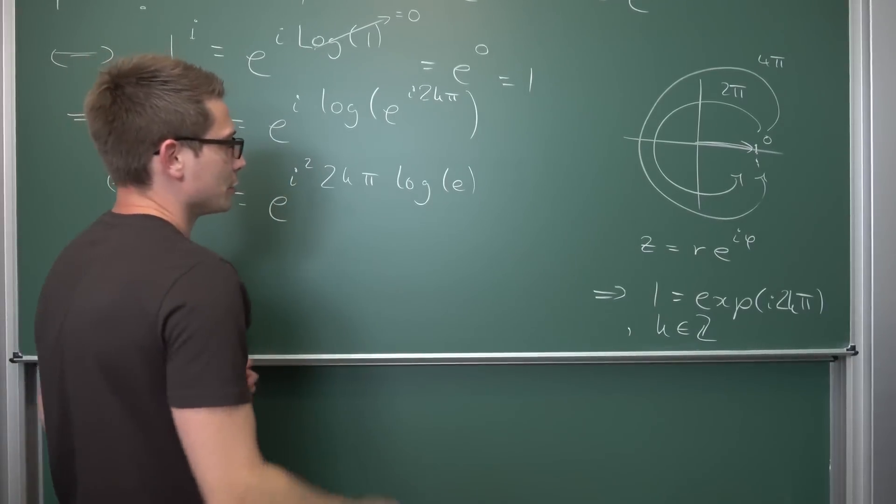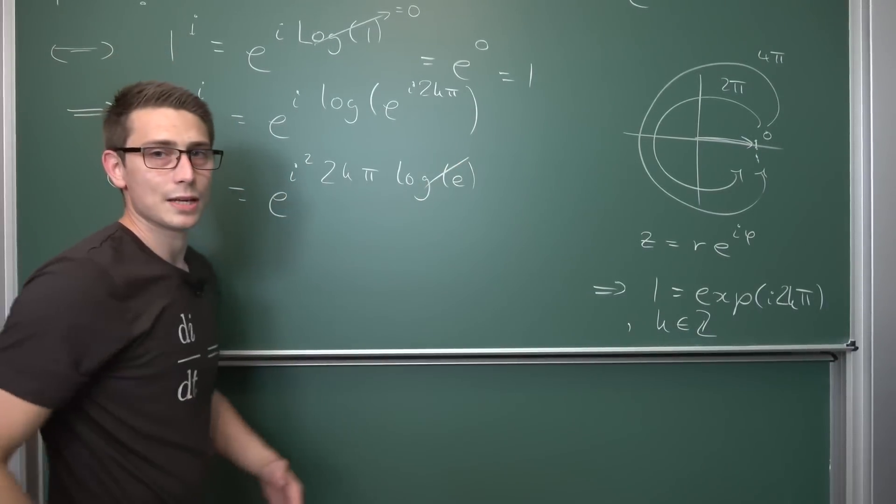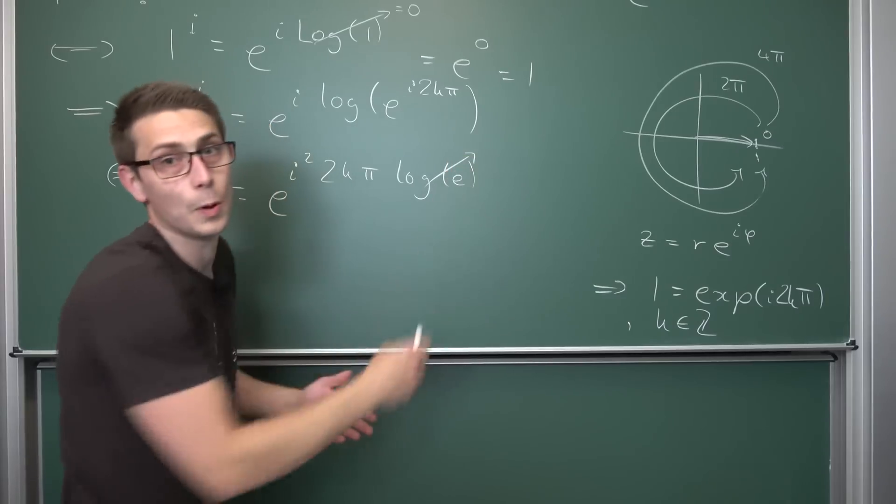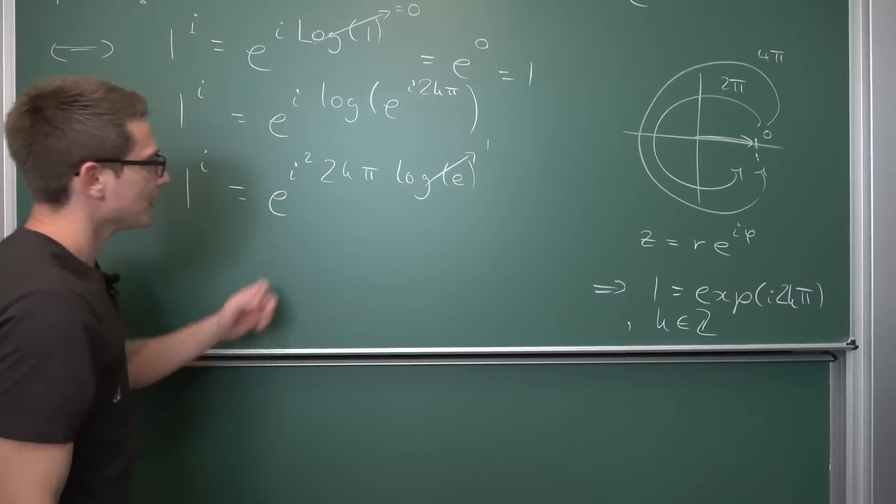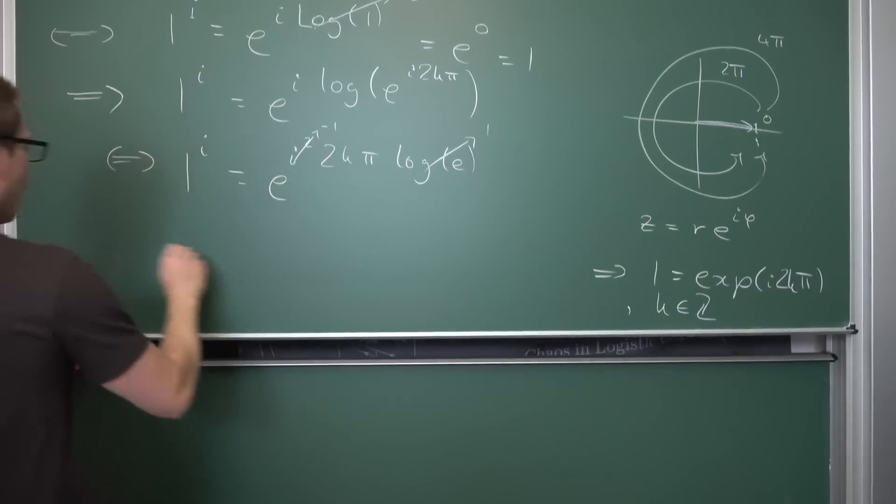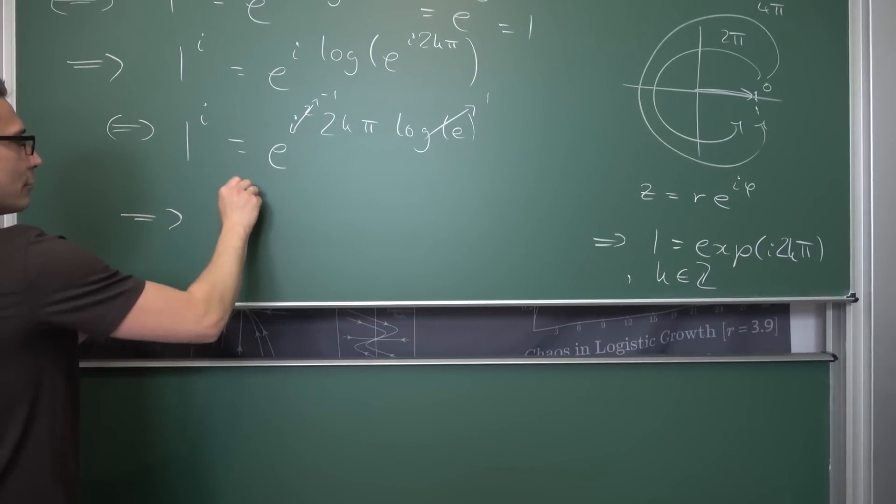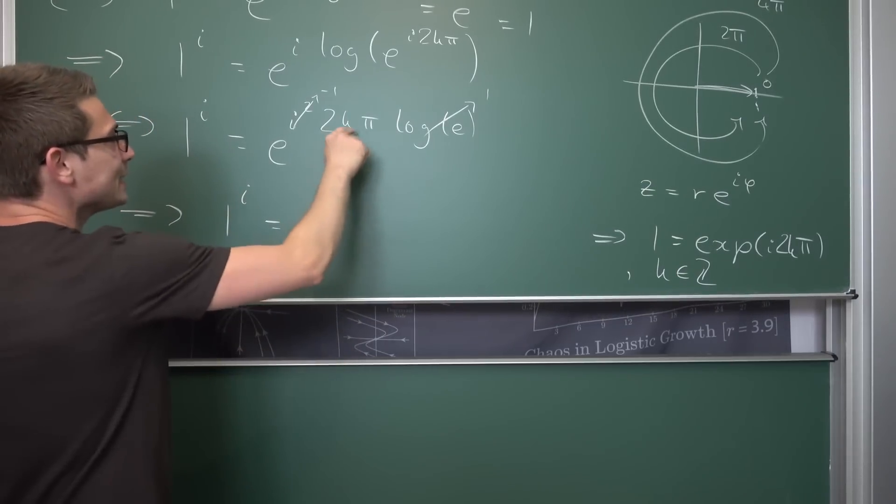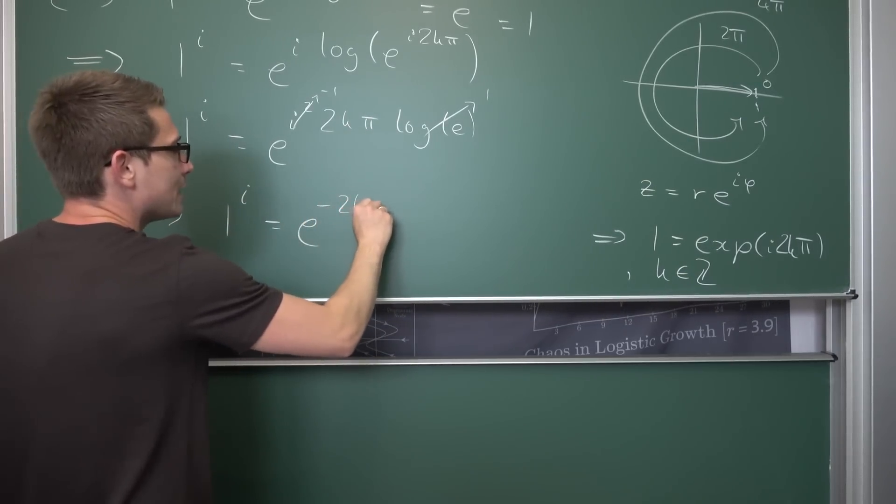I mean, some things here are very trivial. Logarithm of e, doesn't matter which branch, okay, or on the principal branch we could say, this is going to give us just 1. i squared, by definition, is going to give us negative 1. Meaning, overall, 1 to the i-th power is also nothing other than e to the negative 2kπ.